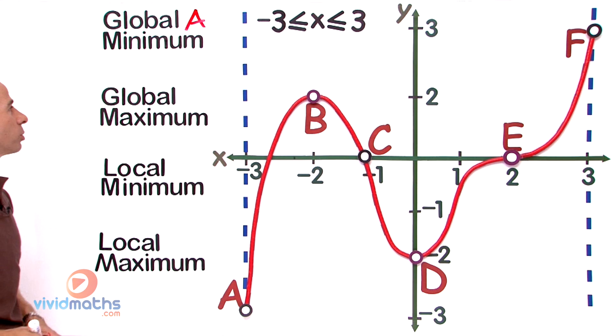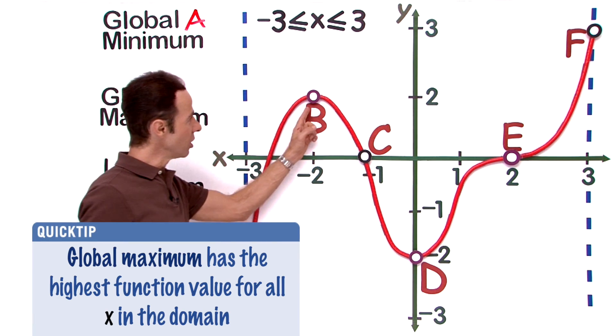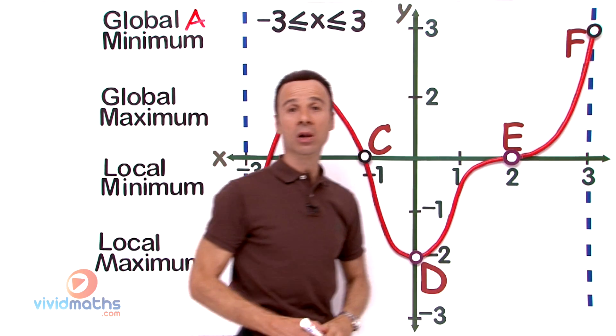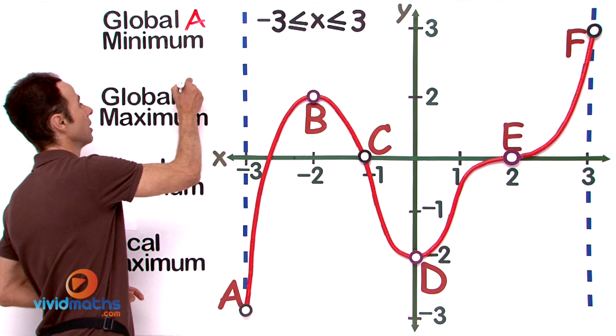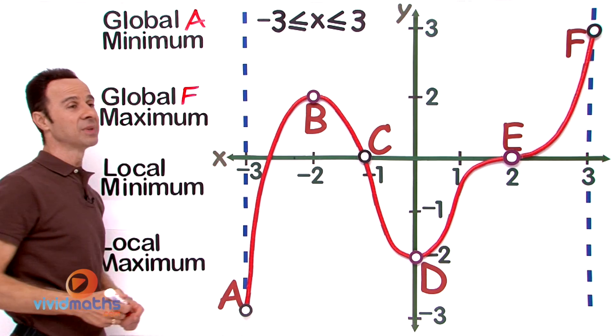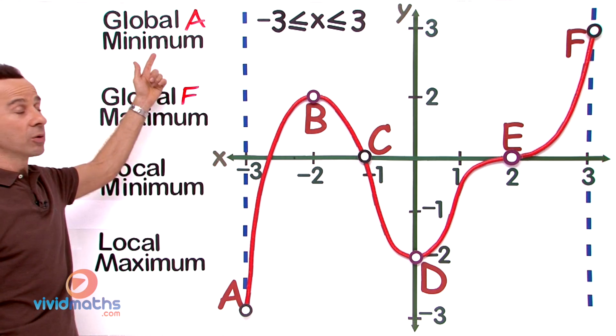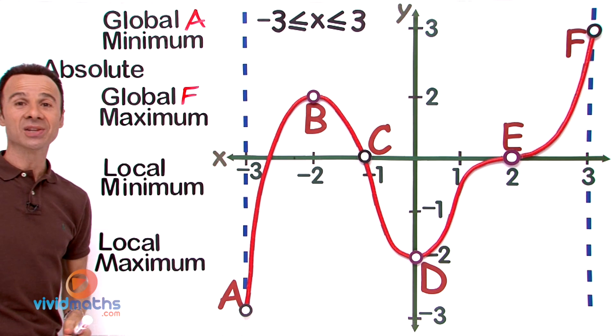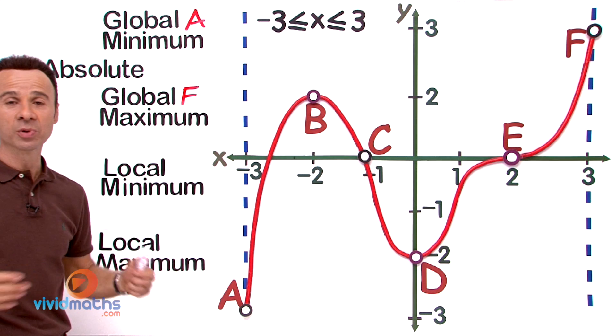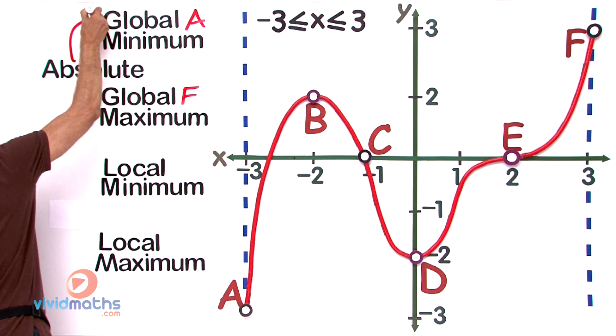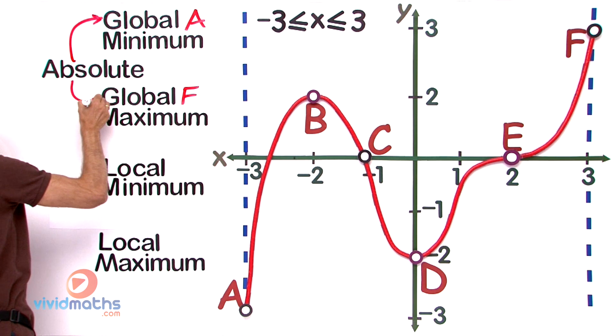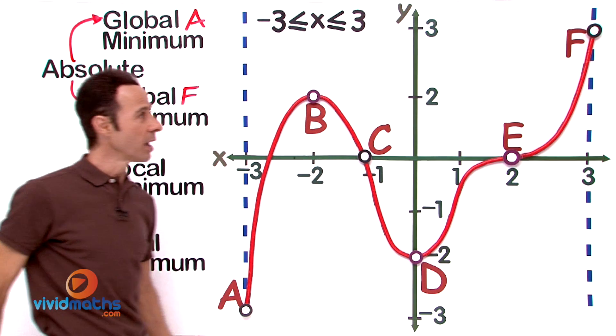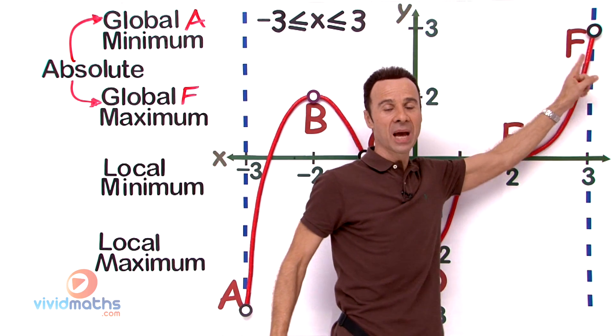Now let us look for the global maximum—meaning what is the highest. It goes all the way up there. That is our global maximum, F right over here. Now mind you, some textbooks do not use the word global at all—they use the word absolute. Absolute means exactly the same thing as global. So right over here at A we have an absolute minimum, and over here at F we have an absolute maximum.